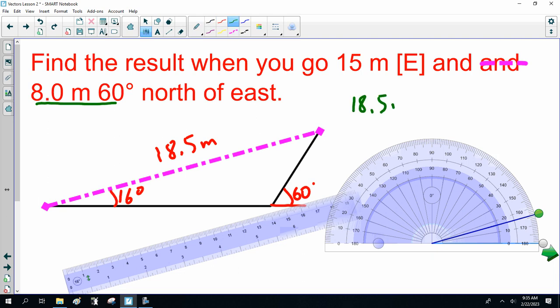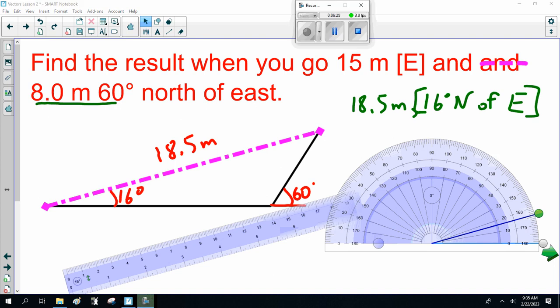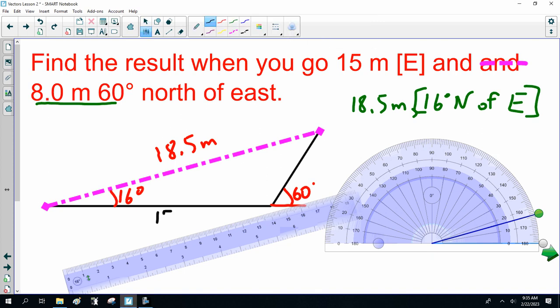So the resultant I've got is 18.5 meters 16 degrees north of east. I go east then swing north to make an angle of 16 degrees. I should label this 15 meters and 8 meters.